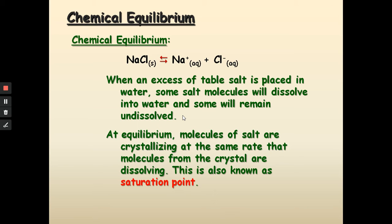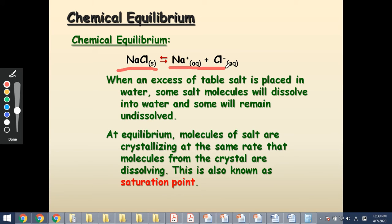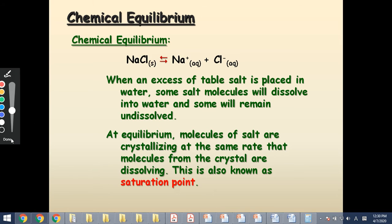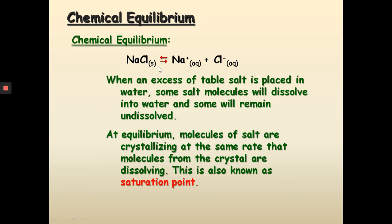This is also known as a saturation point. When you have reached chemical equilibrium, the amount of table salt that's solid breaking down into ions — the process of dissolving — is equivalent to the dissolved table salt recrystallizing back to solid. Therefore, the amount of table salt dissolved in the water is not going to change. This is what we call the saturation point, as we learned last chapter — when the maximum amount of table salt is dissolved so that you cannot dissolve anymore.